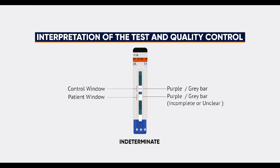If one purple or grey bar appears in the strip's control window, labelled control, with an unclear or incomplete purple or grey bar in the strip's patient window, labelled patient, the TB-LAM result is indeterminate. For a better clinical decision, the test should be repeated. Alternatively, collect a new urine sample in the following days from the patient and test — early morning urine is recommended.